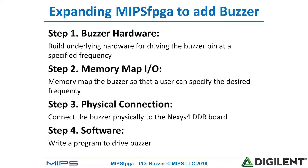The steps for expanding the MIPS FPGA system to add this buzzer are: first, add the buzzer hardware by adding a Verilog module that will drive a buzzer pin at the specified frequency. Second, memory map the I/O, physically connect the buzzer to the Nexus 4 DDR board, and then write software to drive the buzzer. Let's start with the first step: writing the buzzer hardware.